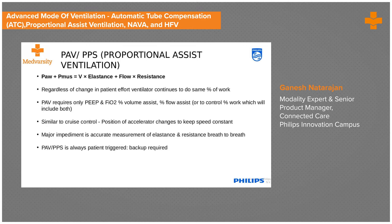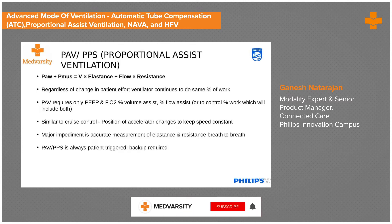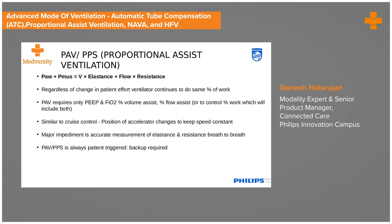PAV is like a cruise control where the accelerator keeps changing just to keep the speed constant. You set the PEEP, the FIO2, and the target for the patient, then set the percentage of flow and volume assist.